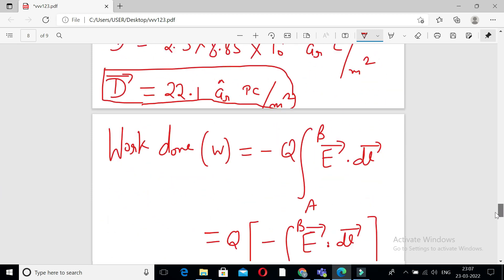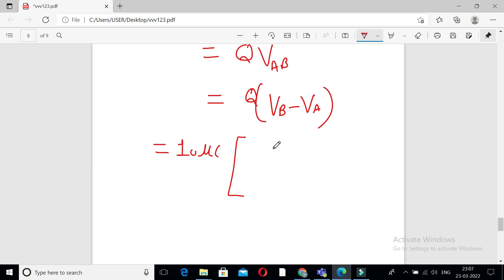So VB is 10 upon 16, 1, 1 by 2 minus 10 upon 1, 1 by 2 minus 1 by 2.